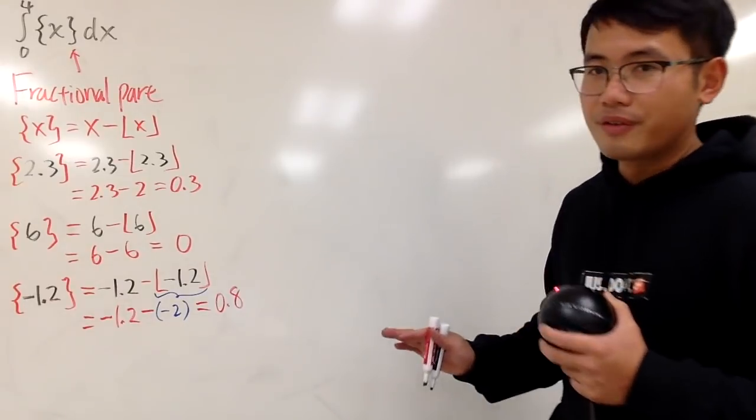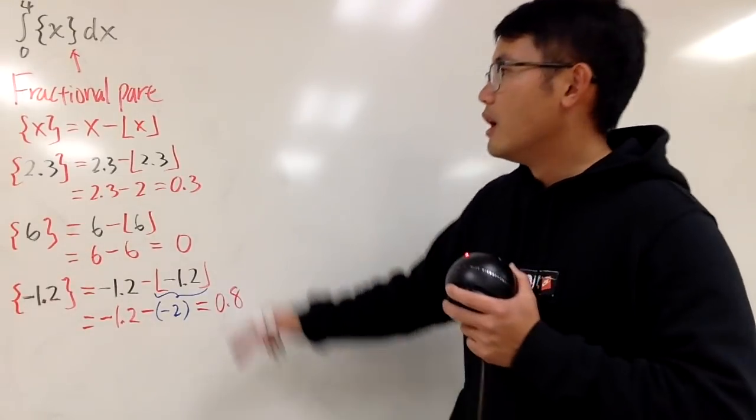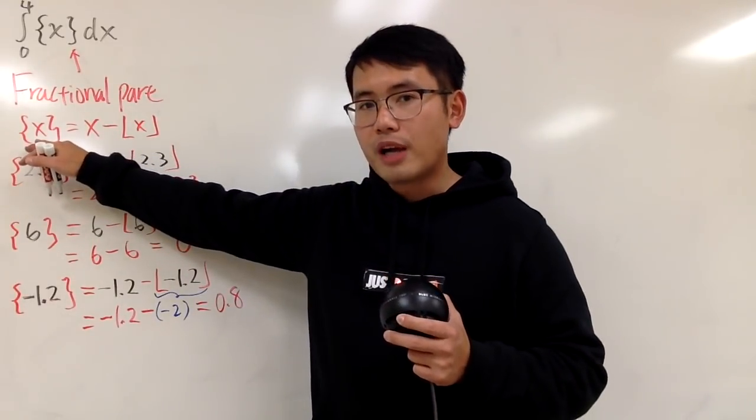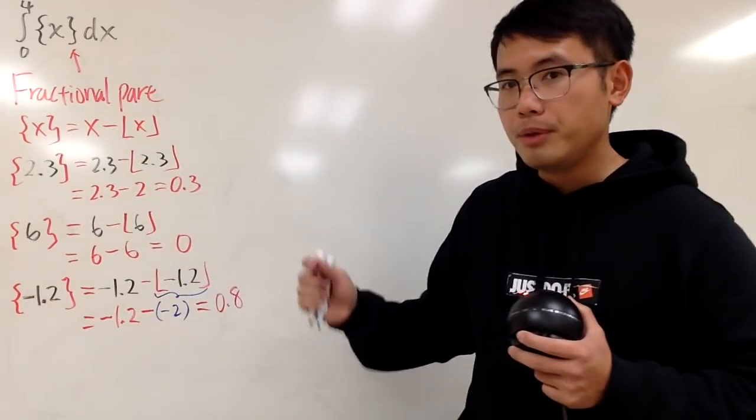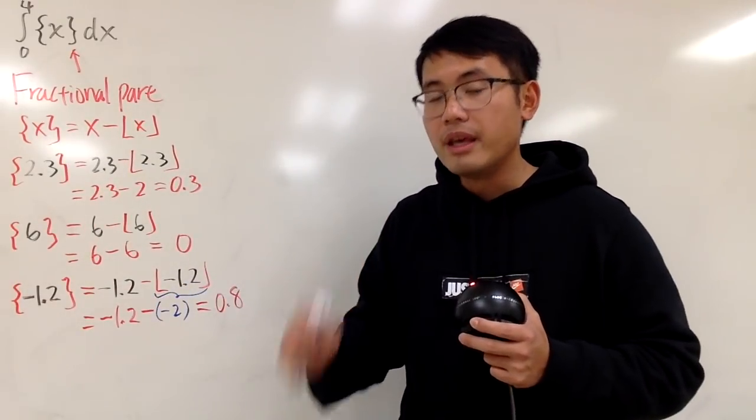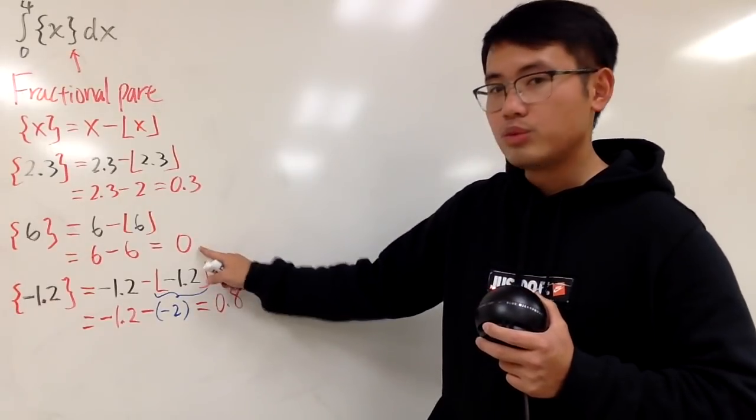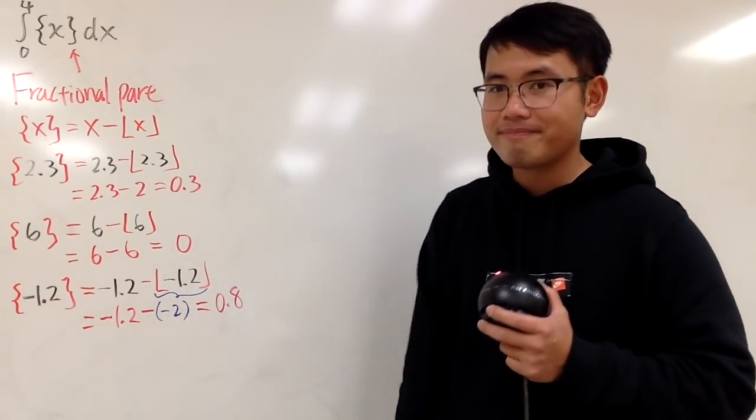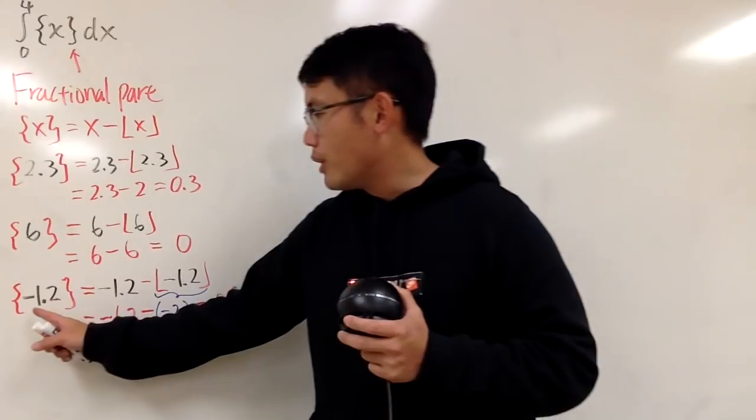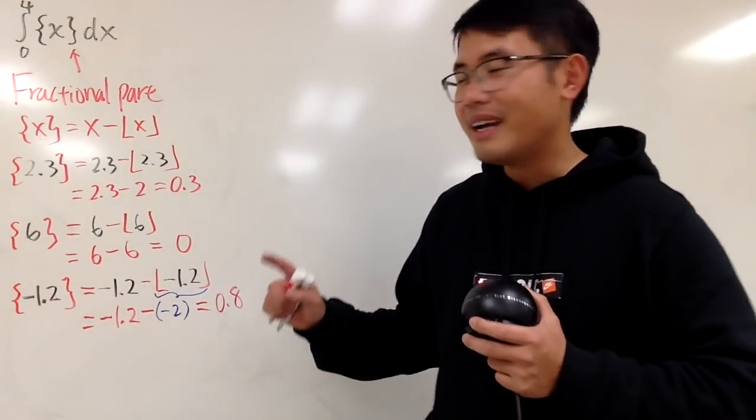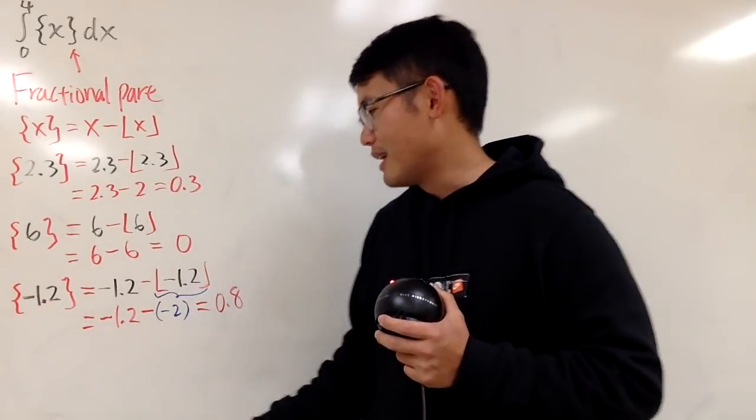Let's make some observation first. First of all, the output of a fractional part is always going to be in between 0 and 1, including 0 but not 1. You can get 0 but never exactly 1. Second, when you have negative number, do it carefully. And let me explain this, which is the number line you get. So, let's use this right here.